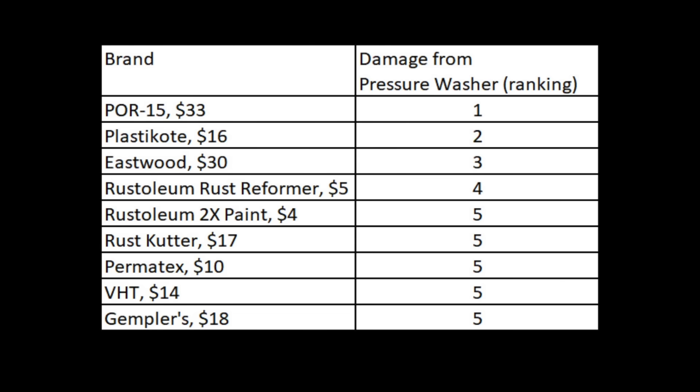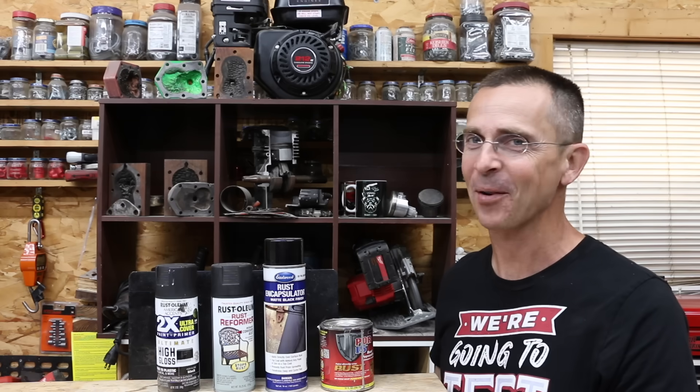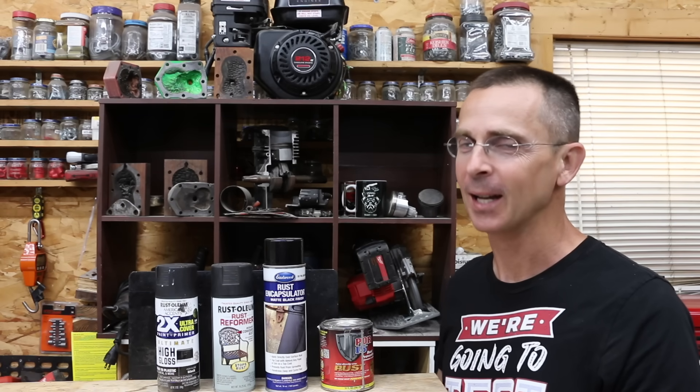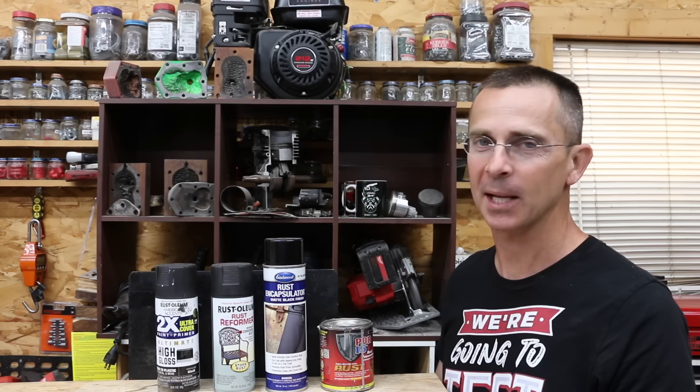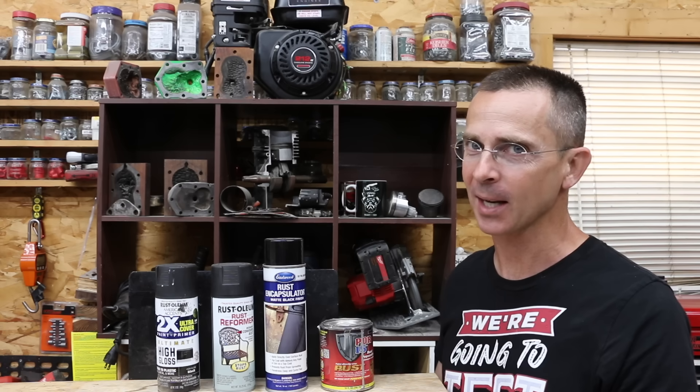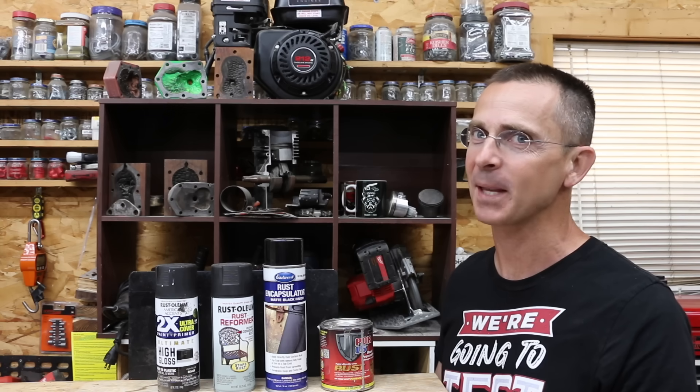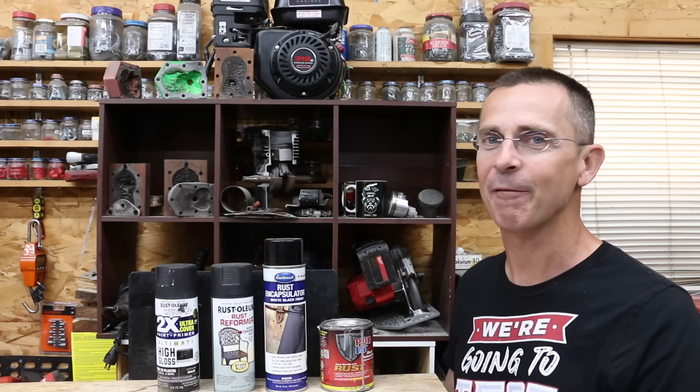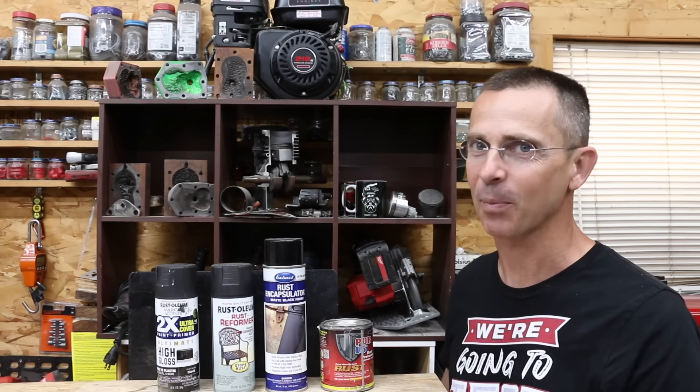Trying to determine which products did the best job at surviving the pressure washer is fairly subjective, but the POR-15 definitely seems to have done the best. Plastic coat seems to have finished in second, Eastwood third, and Rust-Oleum Rust Reformer fourth. POR-15 definitely seems by far the best product, but it's also by far the most expensive. I also like Eastwood quite a bit, but it too is pretty expensive. So if you're really concerned about the budget and depending on the project, Rust-Oleum Rust Reformer might be the best option. Rust-Oleum 2X, which is a very affordable paint primer combination, did a very respectable job when you consider the price.